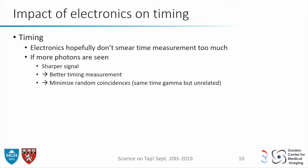What's the impact of electronics on timing? As with the crystal, decay time and number of photons impact performance. If the electronics are noisy, you won't have good timing. Electronics with stronger gain produce a sharper signal for a better trigger. You also have random coincidences — events that just happen to occur at the same time by chance. With bad timing, you need a wide coincidence window to gather all true events, but you also gather background noise. That's why you want really good electronics.